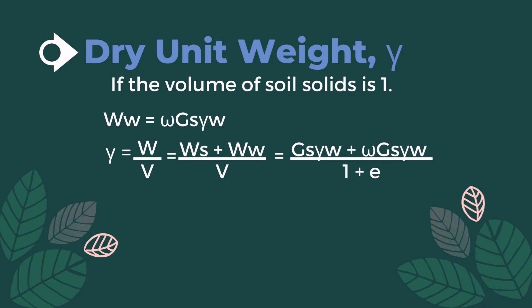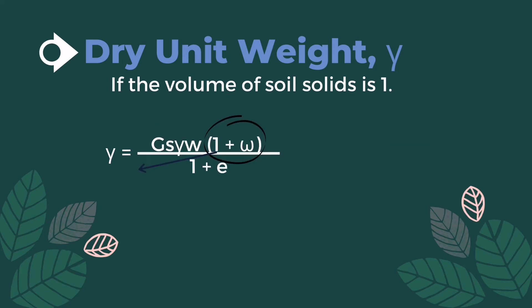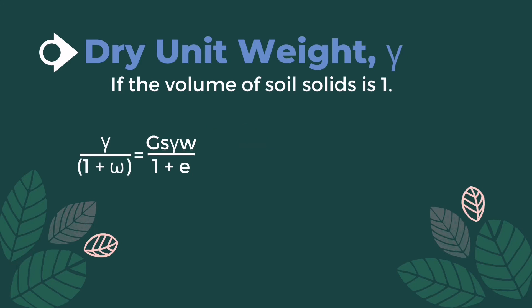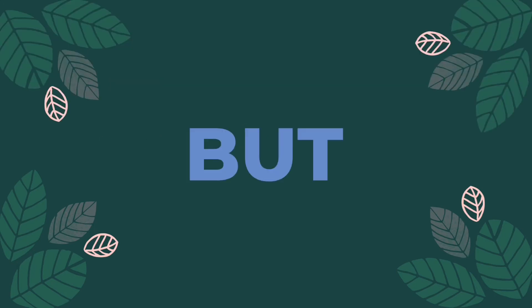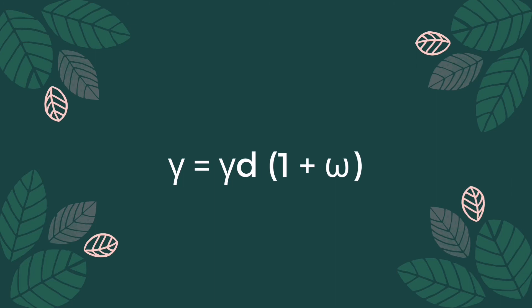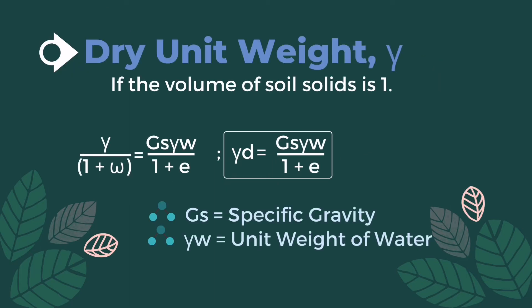The common variable in the numerator is specific gravity and unit weight of water, so we factor out 1 plus moisture content to simplify the equation. Since unit weight equals dry unit weight times 1 plus moisture content, transposing gives us the final formula: dry unit weight is equal to specific gravity times unit weight of water divided by 1 plus void ratio.